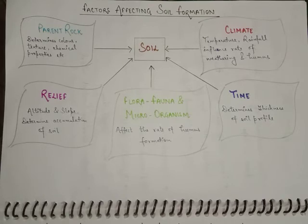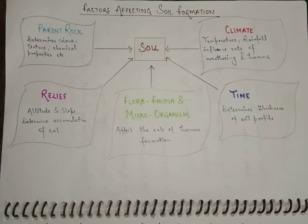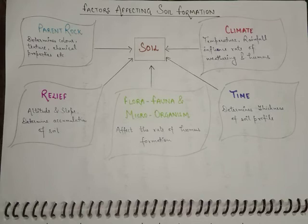Flora, fauna, and microorganisms affect the rate of humus formation in soil, which is also an important factor. Climate determines temperature and rainfall, which influence the rate of weathering and humus in the process of soil formation.